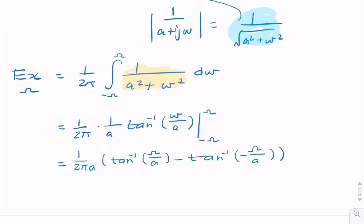Because the tangent function is odd, that allows me to add these together and cancel the two. So the answer is 1 over pi a times the inverse tangent of omega over a. So that's the energy contained within that frequency range.